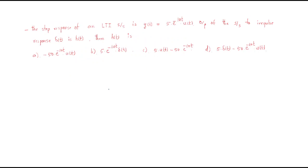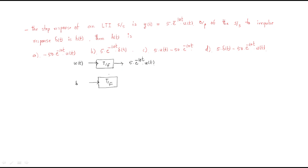The next problem: the step response of an LTI system is y(t) = 5·e^(-10t)·u(t). The output of the same system to an impulse input δ(t) is h(t). We need to find h(t). The key relation is: differentiating the unit step input gives the impulse, so differentiating the step response output gives the impulse response h(t).